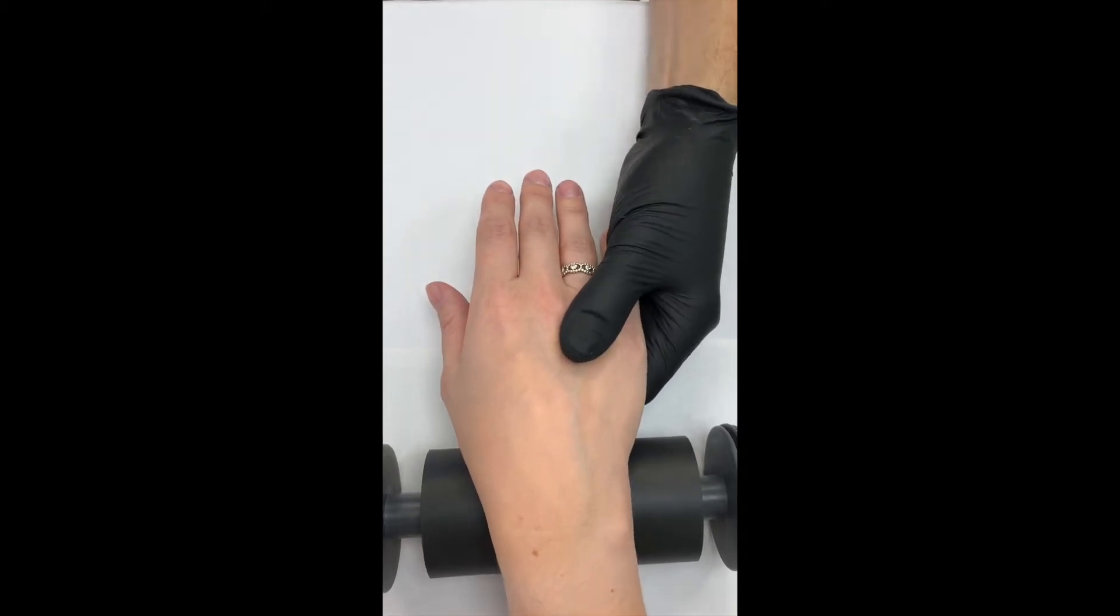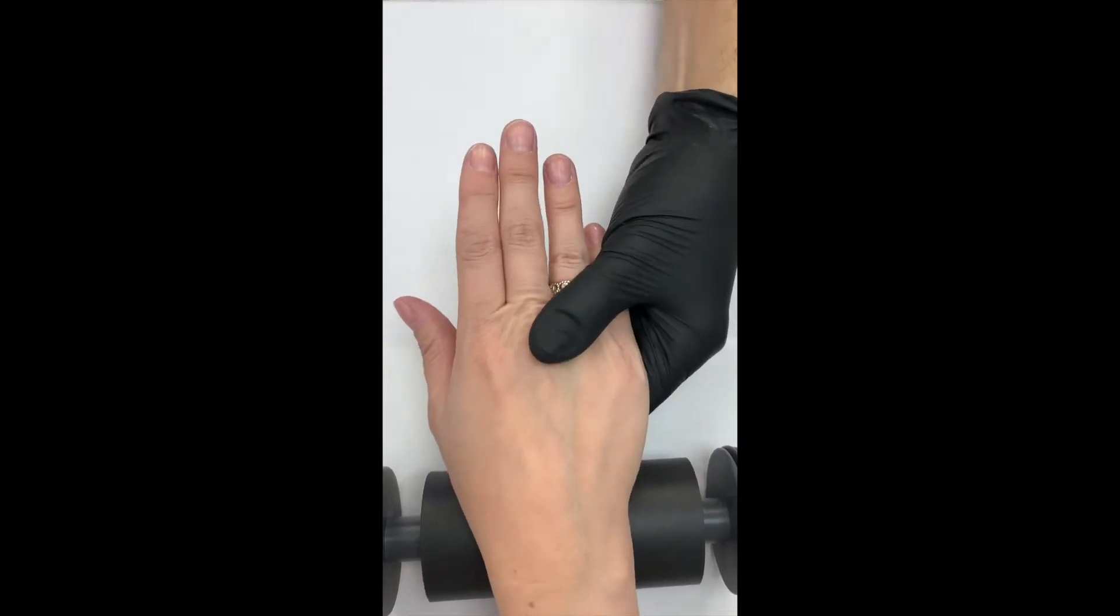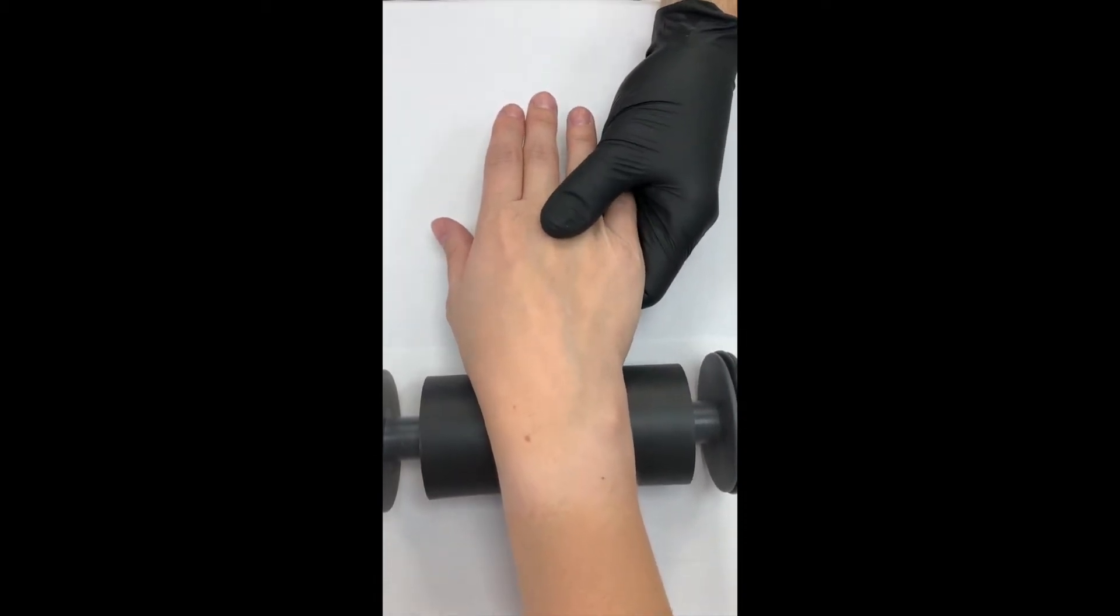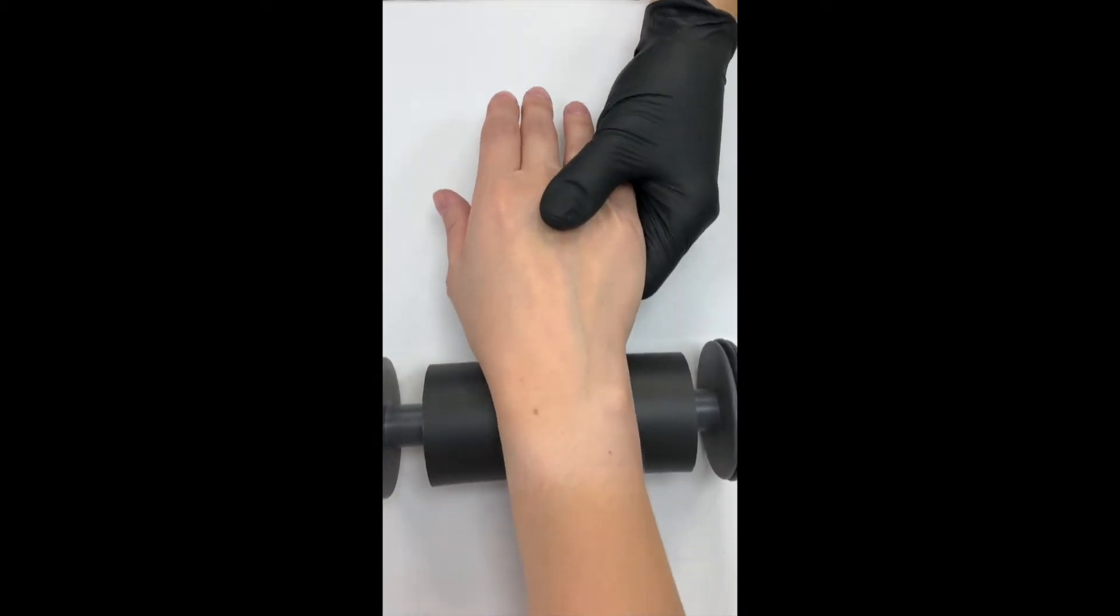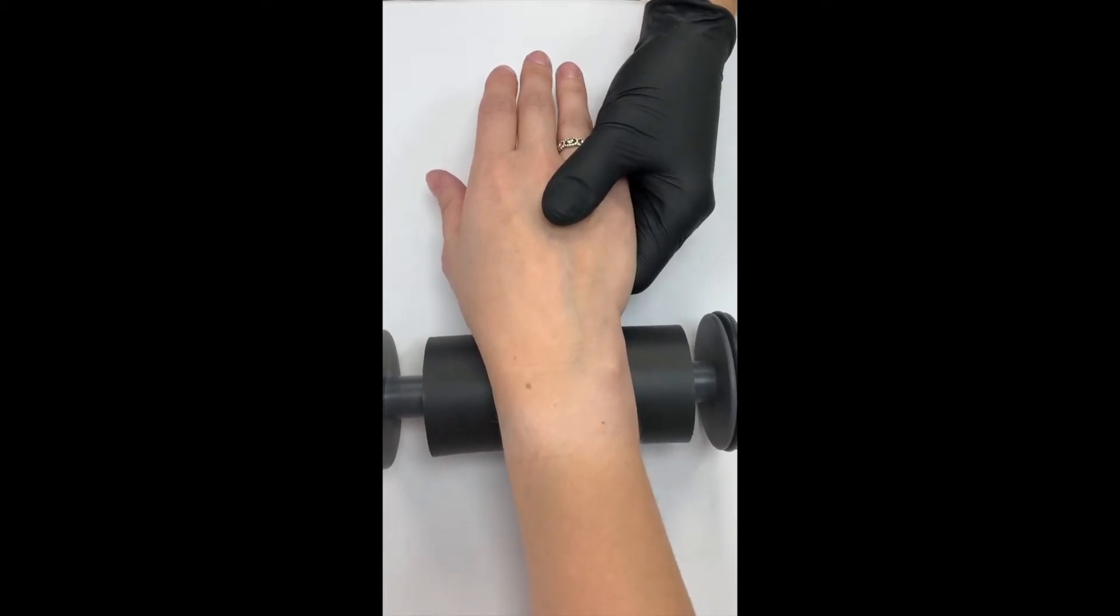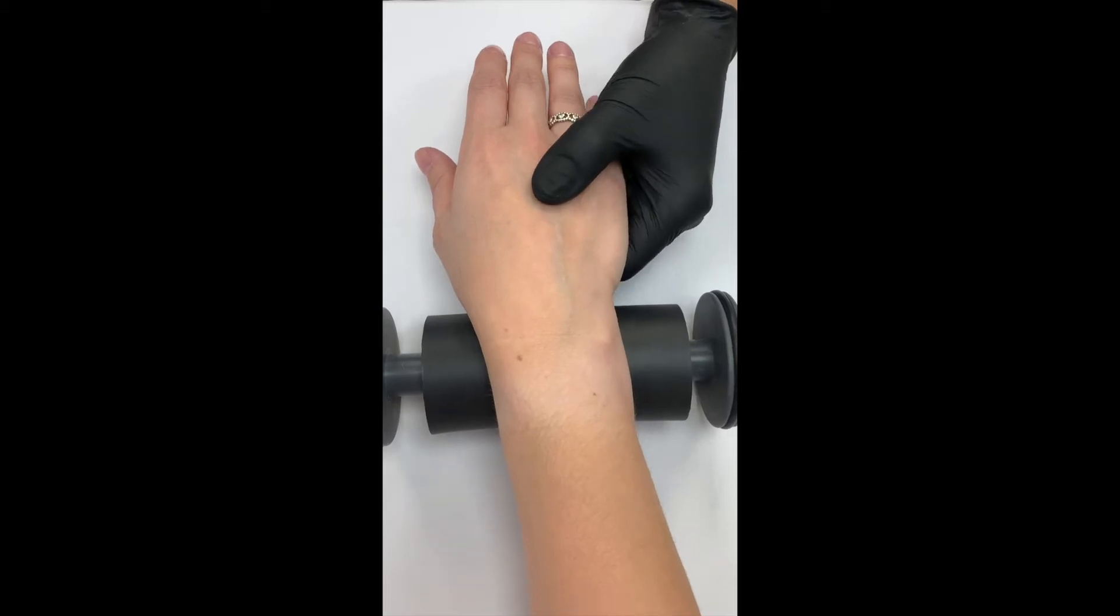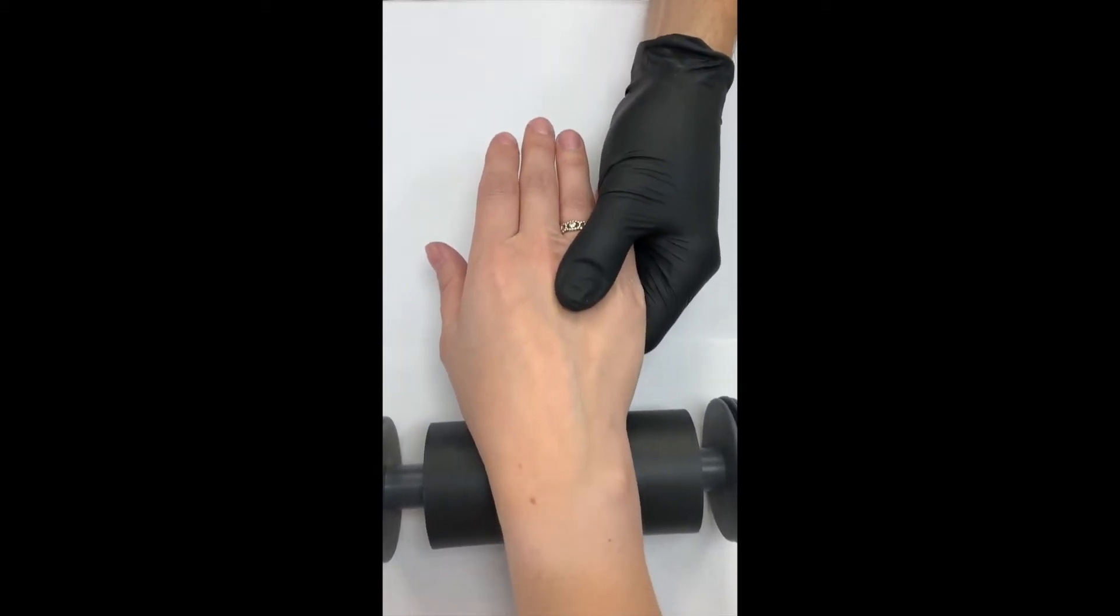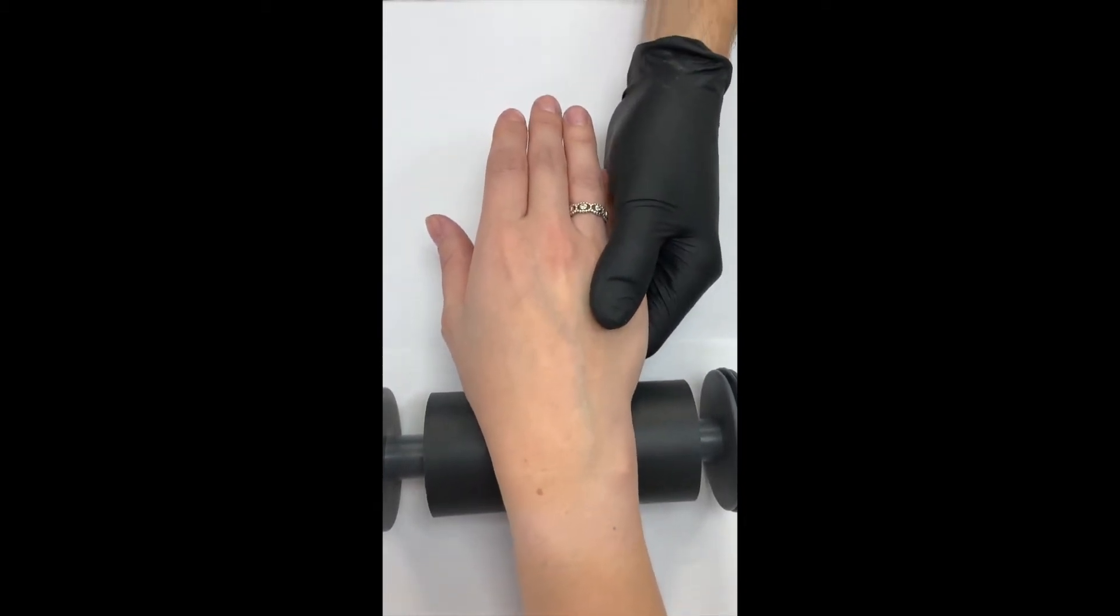The wrist assist is a great invention for when your clients want to pull back and look at what you're doing. All you need to do as a tech is gently glide them forwards and the wrist assist does the work and rolls forwards. If you want to go backwards, you can place the client where you want.